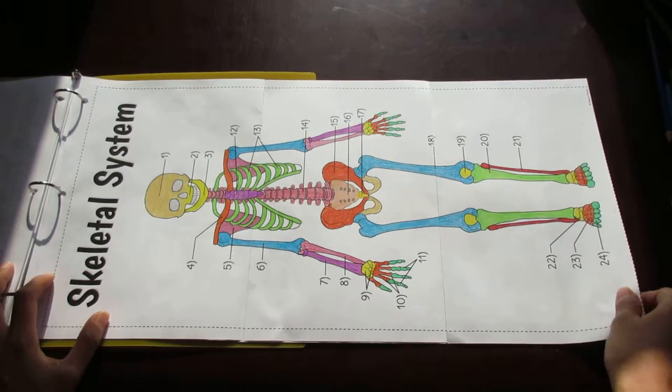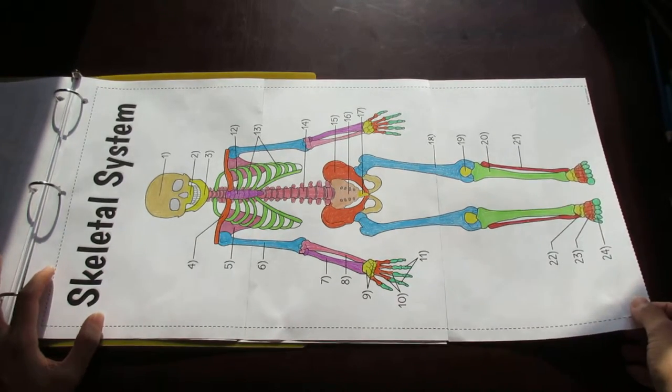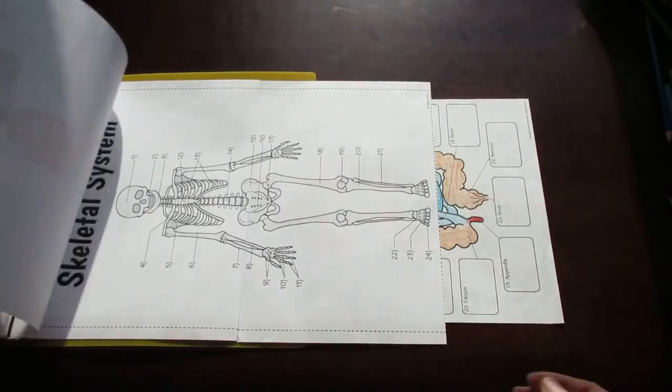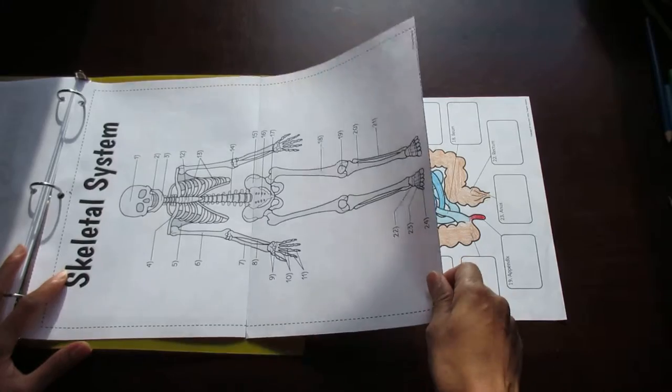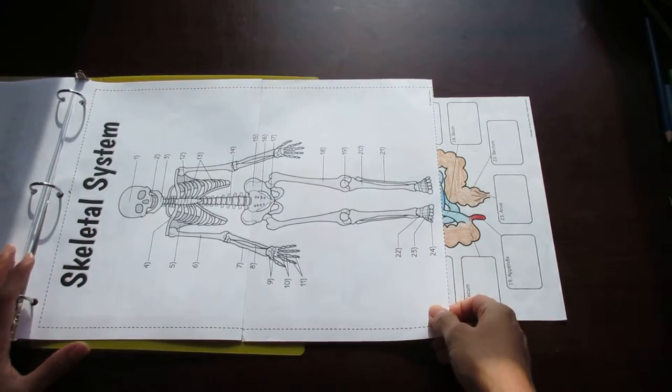Here's the skeletal system in three pages. But for those of you who want to save on paper, I've also provided it in two pages because it still works quite well and it's still quite large for the students to label and color.